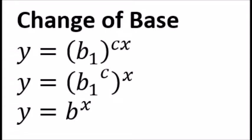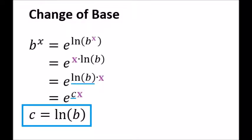To quickly recap from the last lesson, we know that any base b1 to the c times x can be rewritten as another base b to the x. c is a constant. Using laws of logarithms, it turns out that the constant c is the natural log of base b.